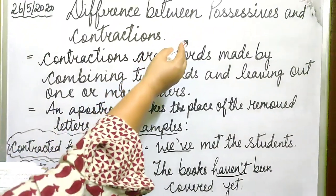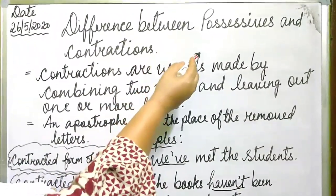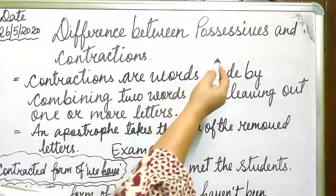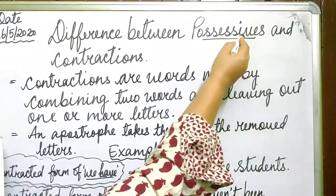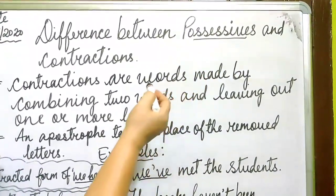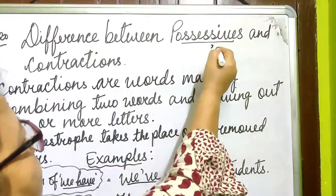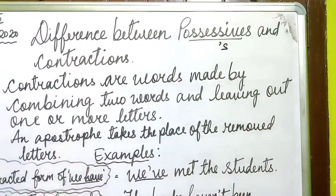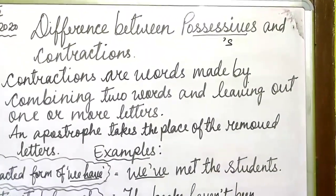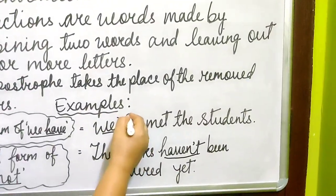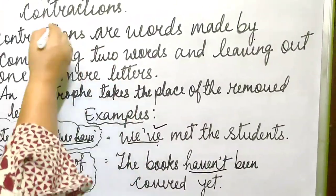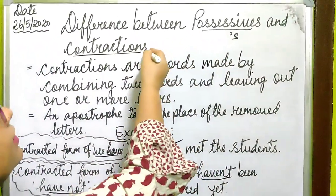So, possessive: the apostrophe is used to show something belongs to someone — possession. The most common way to show belonging is to add an apostrophe. And contraction: the short form of a word is called a contraction. 'Contract' means to become small. This is the difference between possessives and contractions.